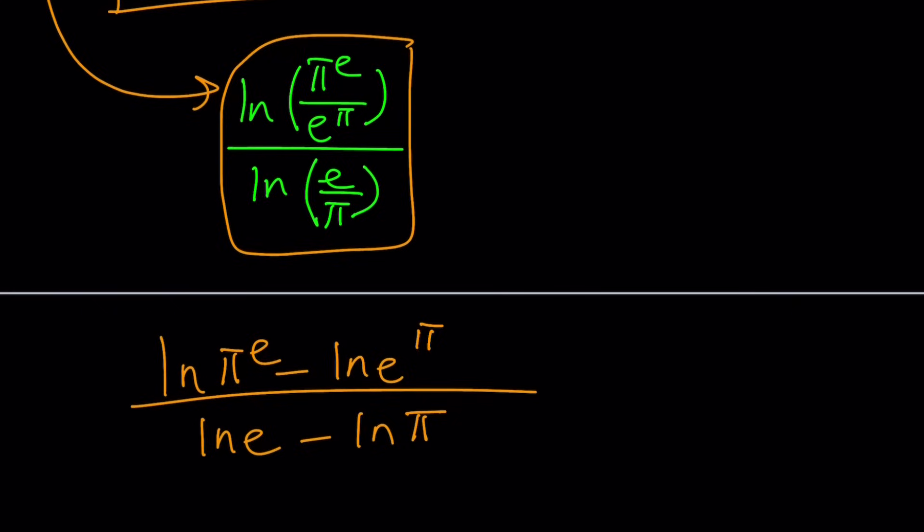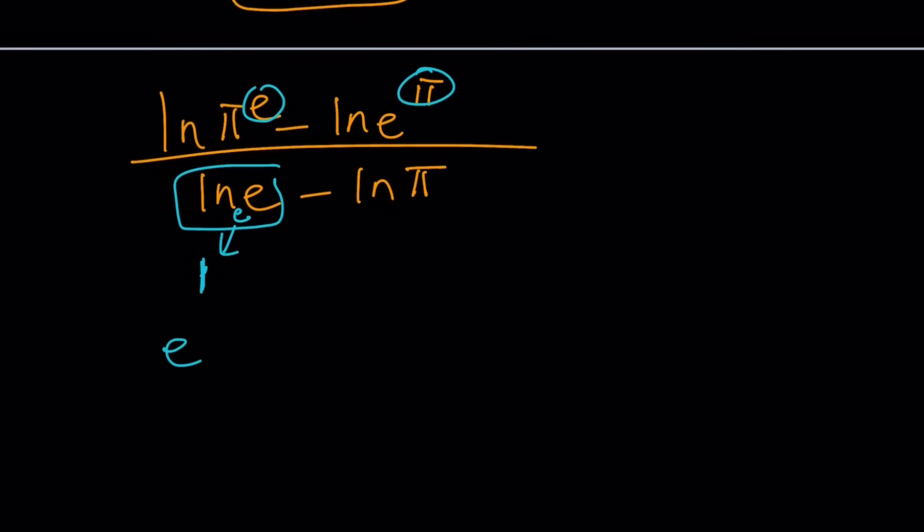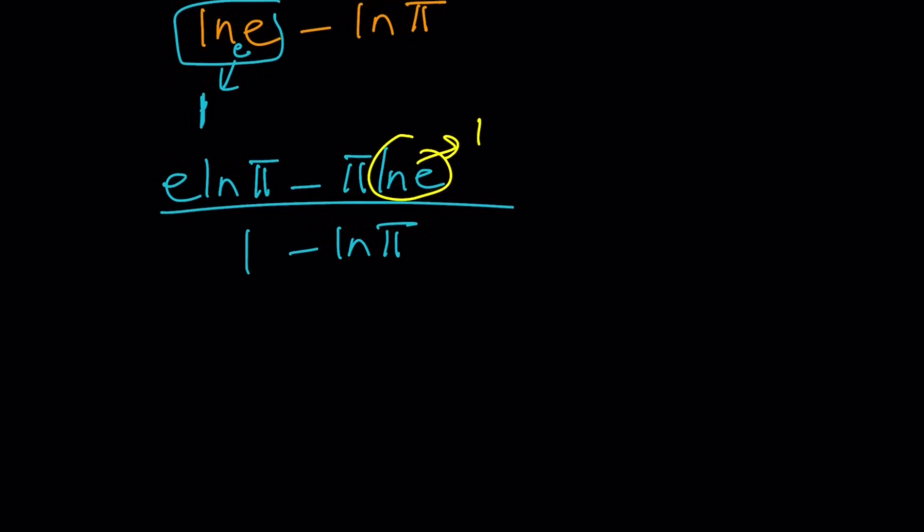Bring these down as well. You're going to get e ln pi minus pi ln e over 1 minus ln pi. ln e pops up again, we're going to replace it with 1. So x becomes e ln pi minus pi, because ln e is 1, divided by 1 minus ln pi. That's the solution.